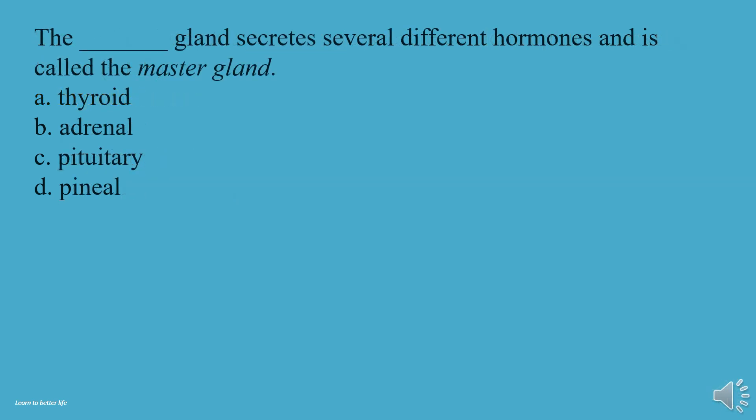What gland secretes several different hormones and is called the master gland? A, Thyroid. B, Adrenal. C, Pituitary. D, Pineal. The answer is C, Pituitary.